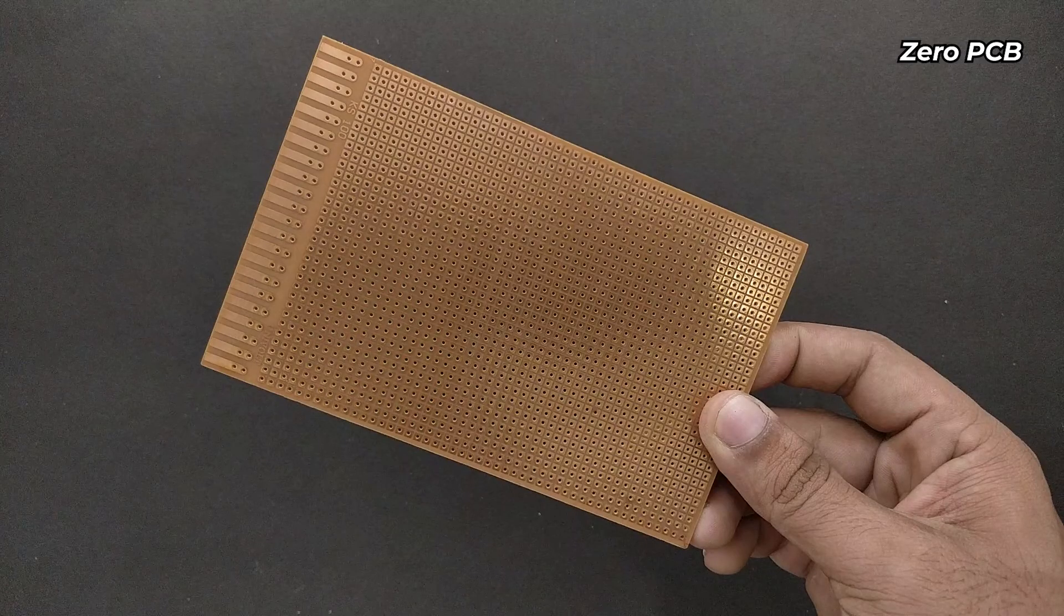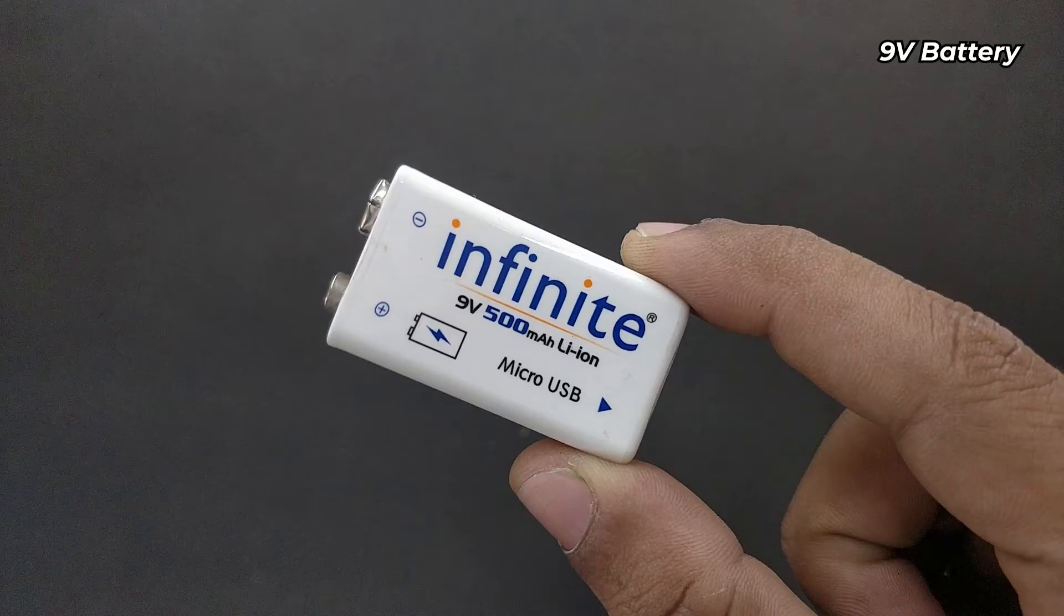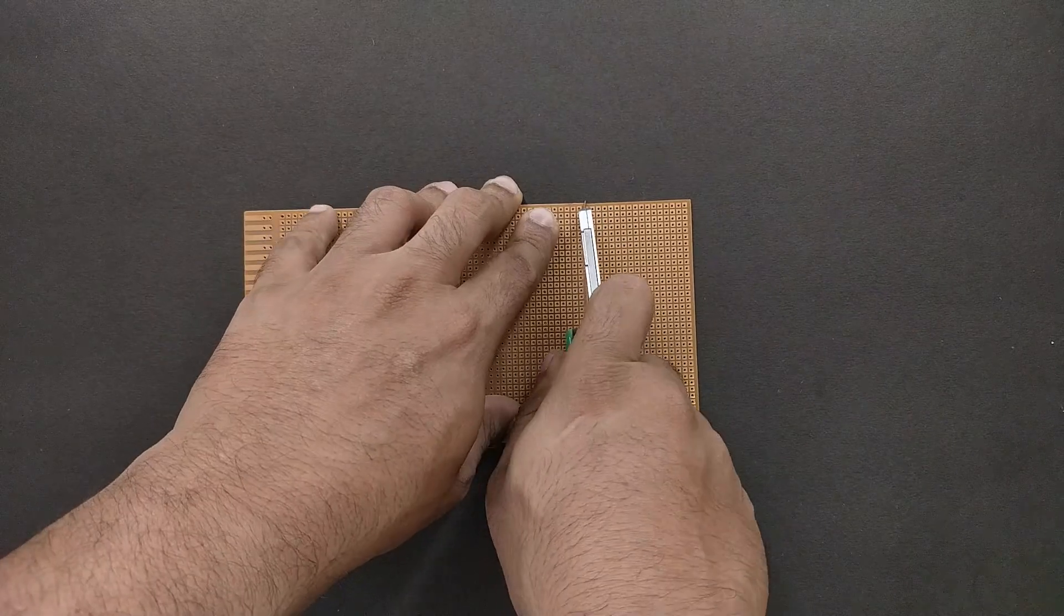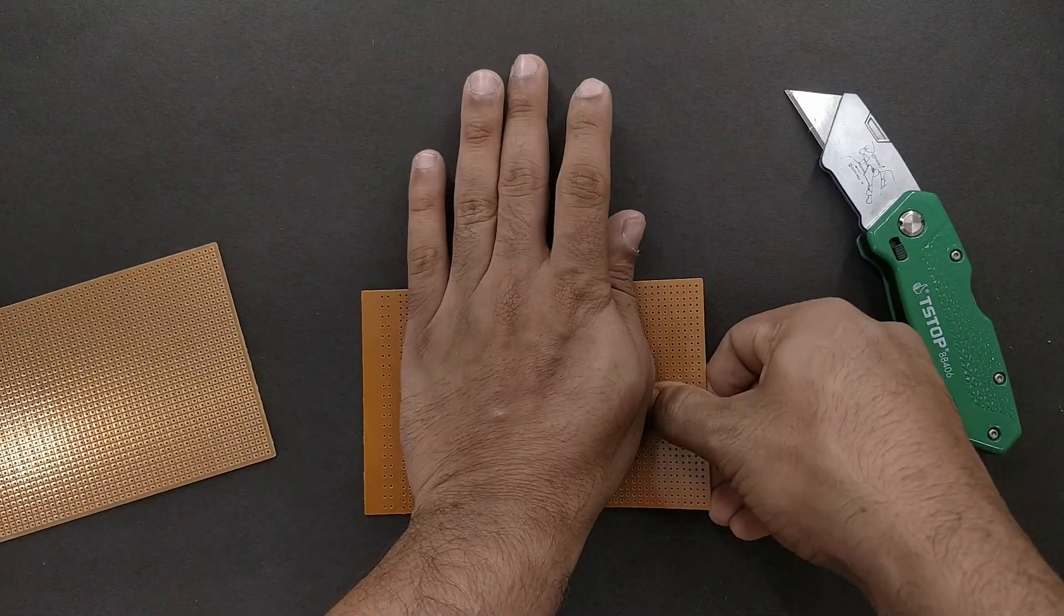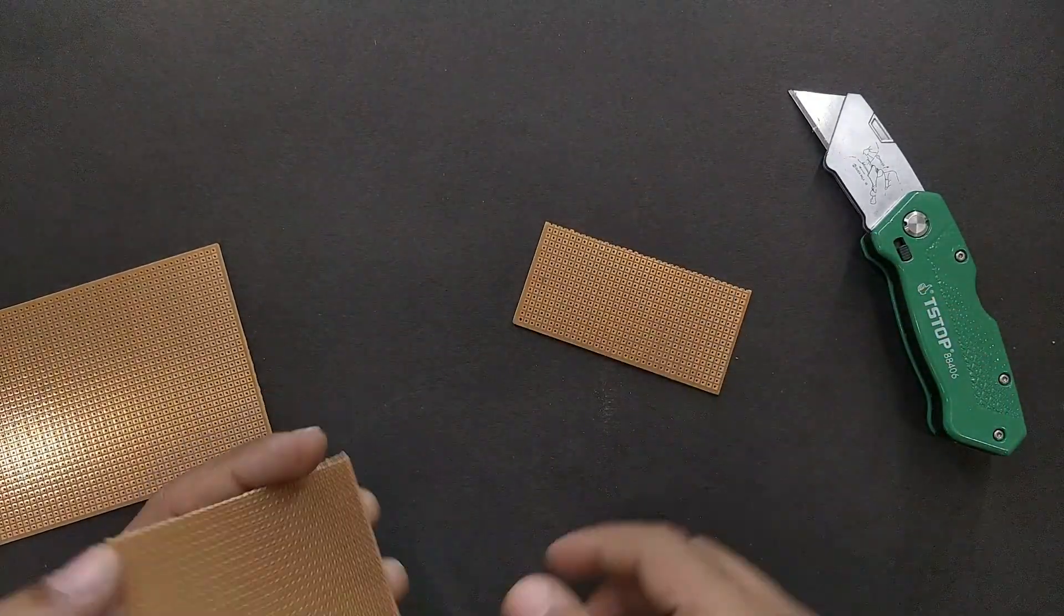A zero PCB board to fix the components, and finally you need a 9V battery and some wires to power the circuit. So first let us cut the zero PCB into a required dimension. It's a small circuit so we need only a small piece.